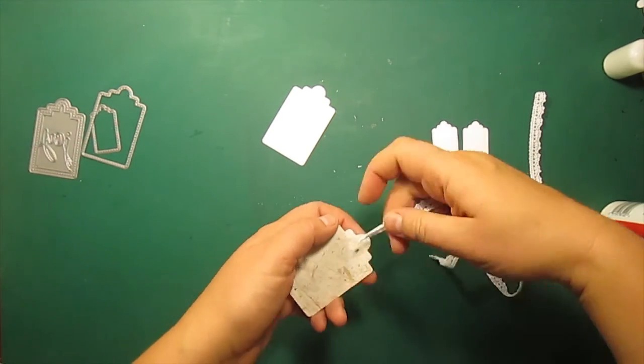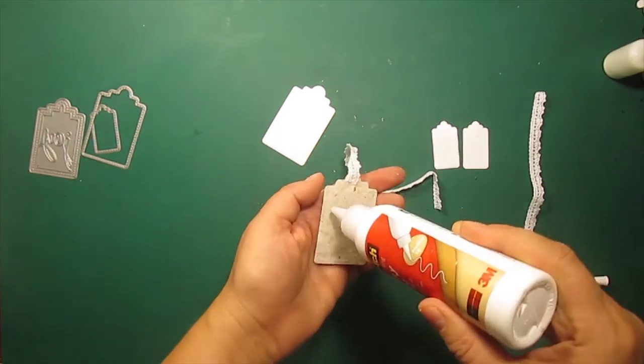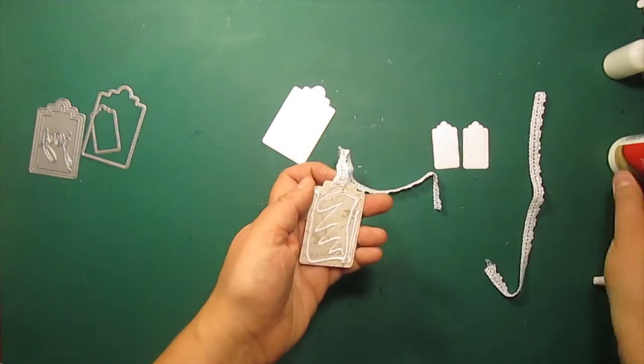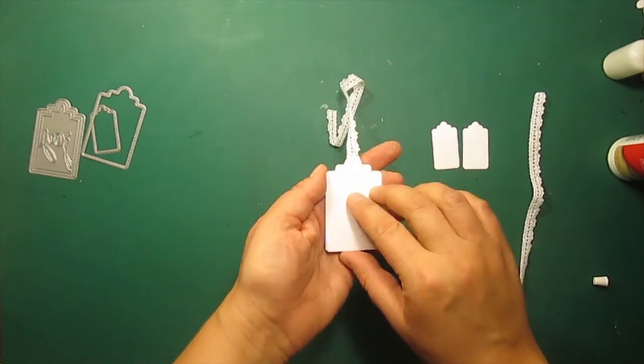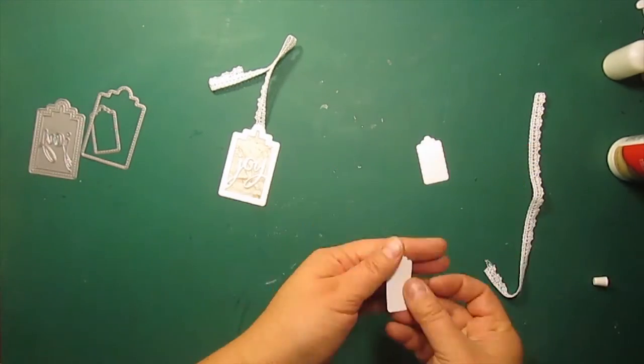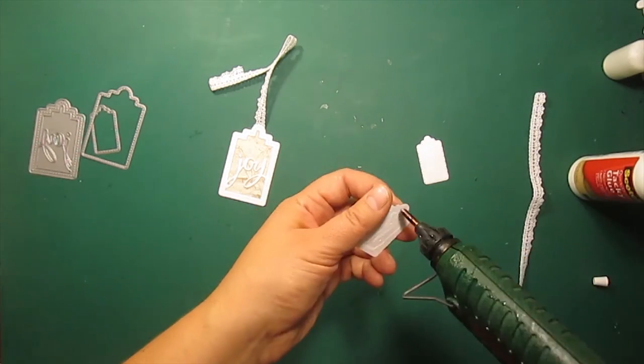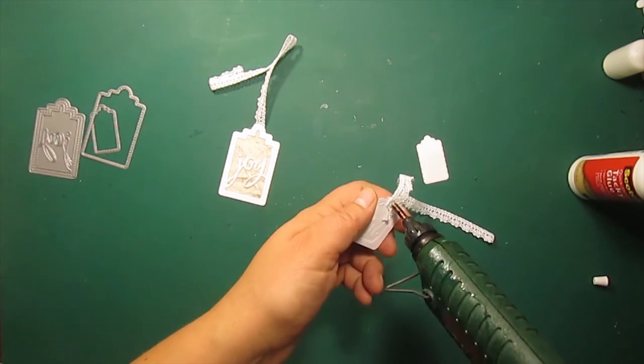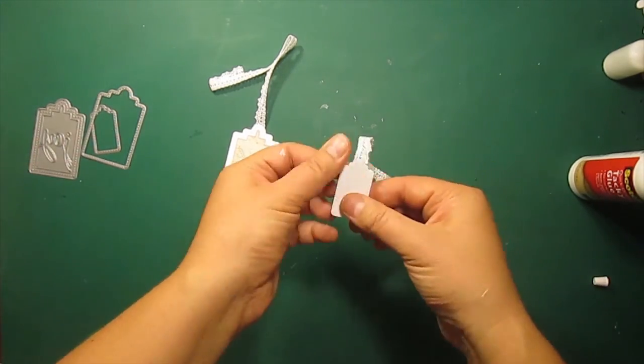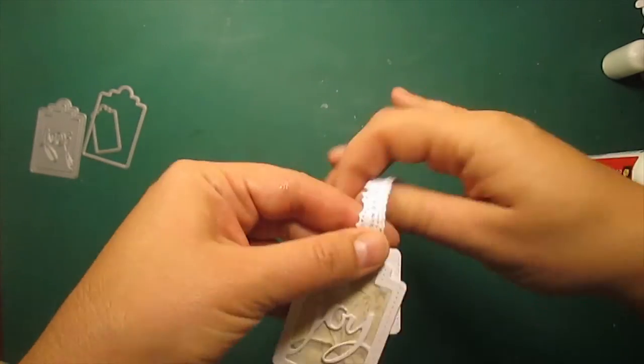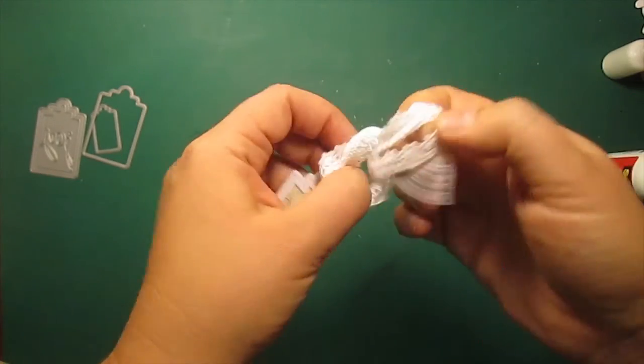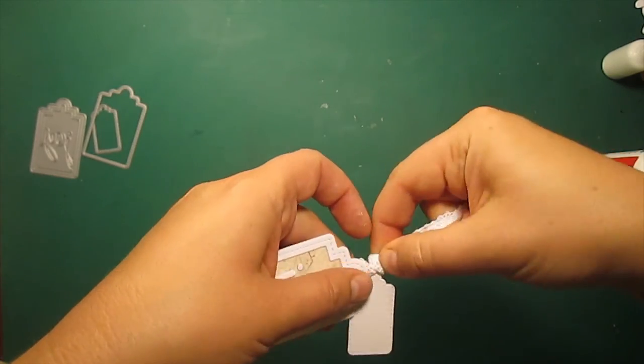I will also add a lacy ribbon to the tag. This small tag is to write a name of the recipient on. I'm tying the two tags together and now they are ready to be added to the bag.